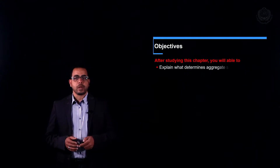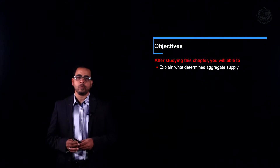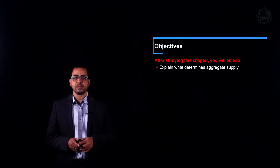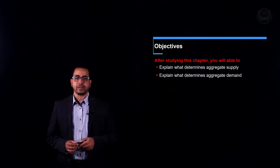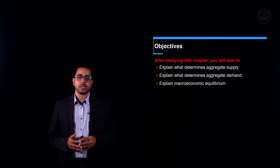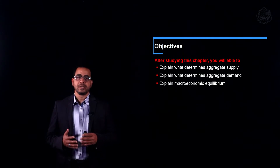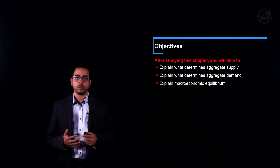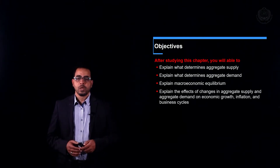We're going to talk about the aggregate supply — what determines it and what factors affect it. We'll learn that there is short-run aggregate supply and long-run aggregate supply. We'll also cover aggregate demand and its factors, and finally the macroeconomic equilibrium where aggregate demand and aggregate supply interact, generating both short-run and long-run equilibrium.